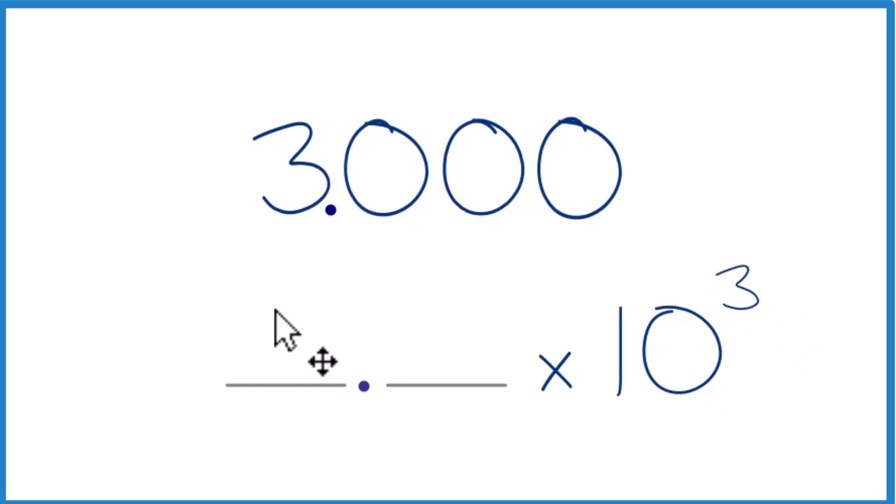And now we have a whole number here. So we're just going to write our whole number. And since we have zeros, sometimes you'll see it written 3.0 times 10 to the third, or even more zeros here.